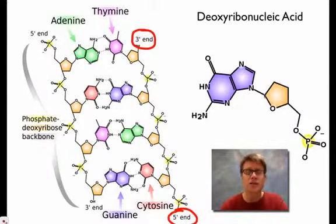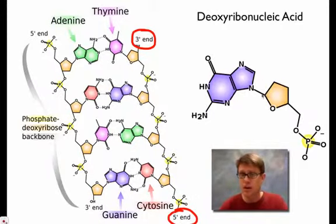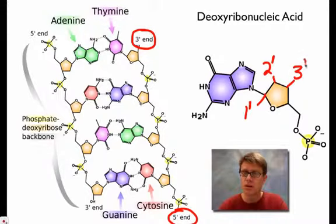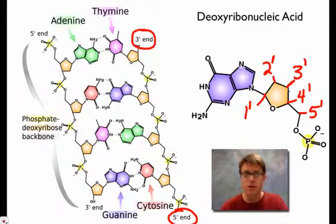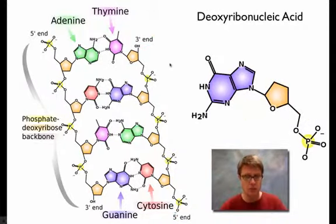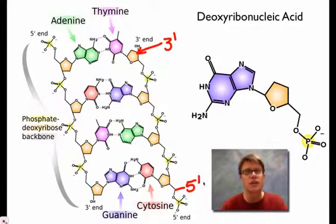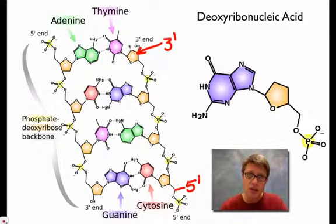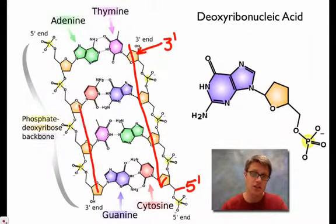Since carbon is so ubiquitous in organic material, we don't draw the symbol on the diagram. There would be a carbon here, here, here, here, and here — and we simply number those carbons. This carbon is the 1 prime carbon, then the 2 prime, 3 prime, 4 prime, and 5 prime carbon. The 3 prime carbon comes off one side, and the 5 prime comes off the other. So when looking at DNA, the 3 prime carbon is here and the 5 prime carbon is down here. DNA flows from 3 prime to 5 prime on one strand, and in the opposite direction on the other.